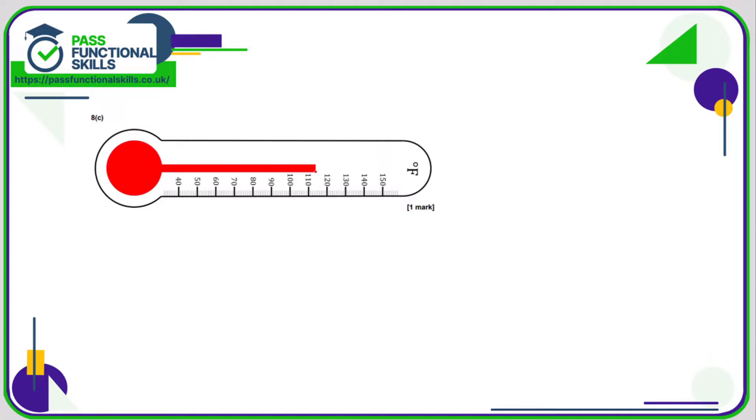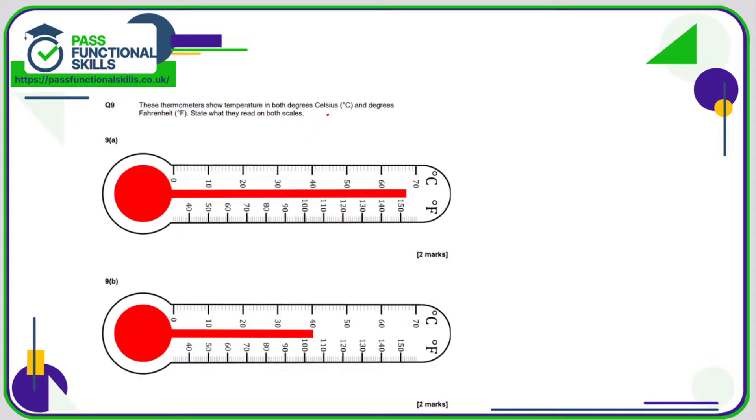For 8c, it's certainly less than halfway between 110 and 120, so I'm just going to estimate that's about 113 or 114. I'm sure both answers are acceptable. Question number nine. We need to state what they read on both scales. On the Celsius, that is 67 degrees Celsius, and for Fahrenheit, I would say that's about 153 degrees Fahrenheit.